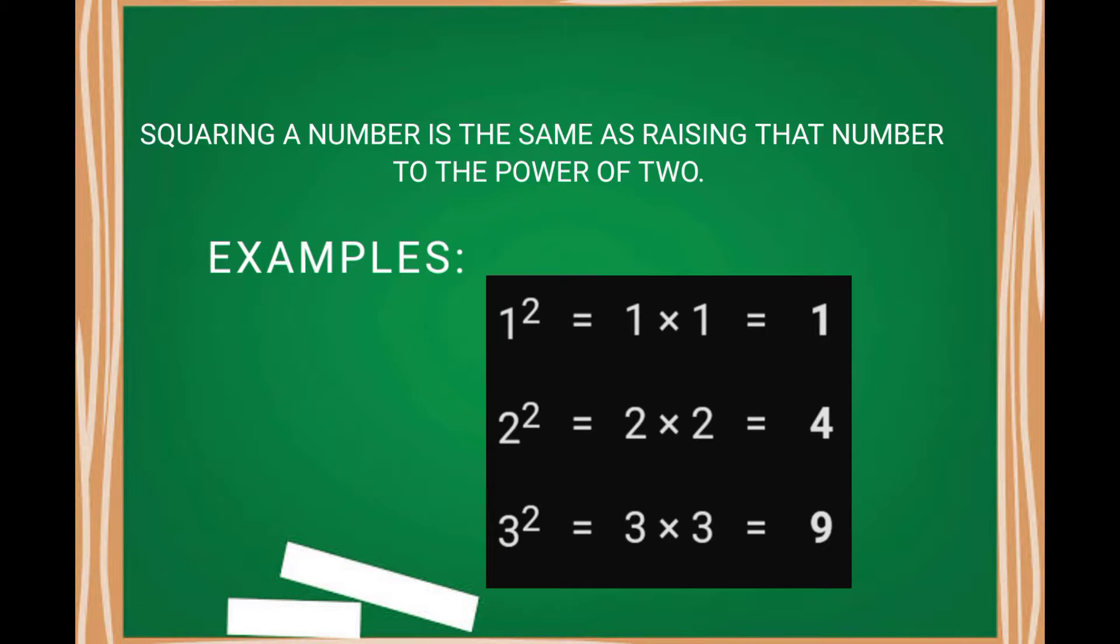Examples: 1 square is 1 into 1 equals 1. 2 square equals 2 into 2 equals 4. 3 square, 3 into 3, which equals 9.